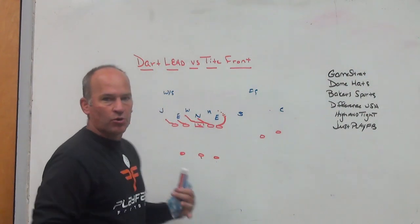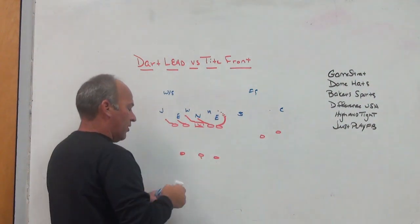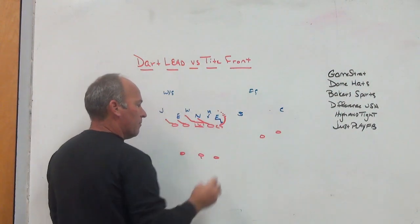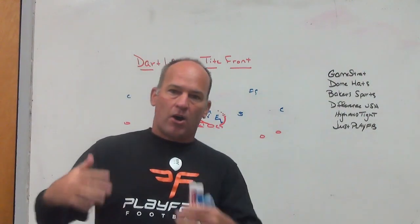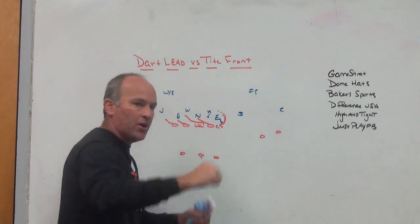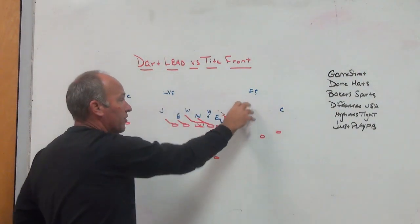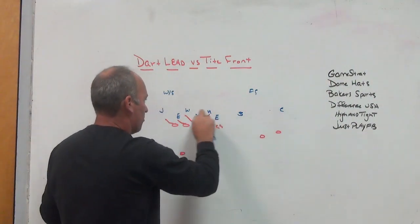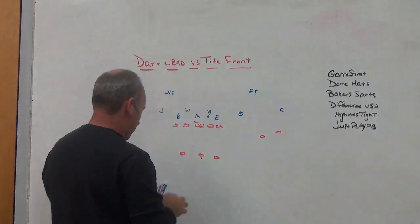But what you find is defensive teams read the blocking scheme. The Mike might fit an open B gap instead of scrape exchanging — he might only scrape exchange on interior inside blocks working down toward the ball. Good three-four or tight front teams treat that arc release like a base block, attacking through it, which makes the Mike plug the open B gap. So running it like old-school veer with arc release, thinking you'll get scrape exchange, isn't working reliably.